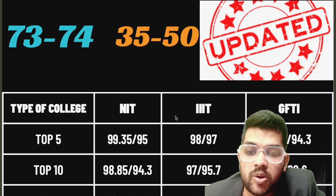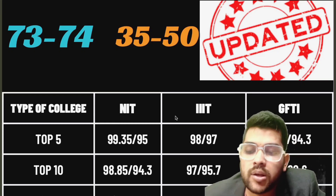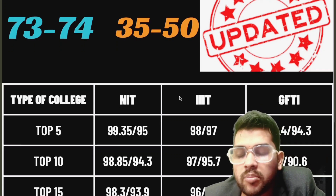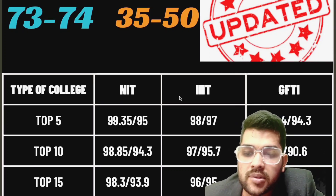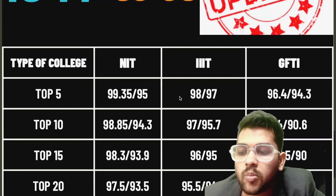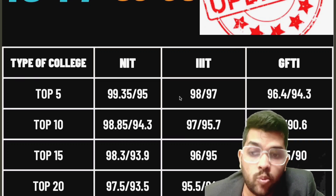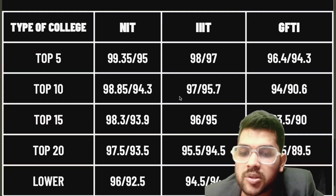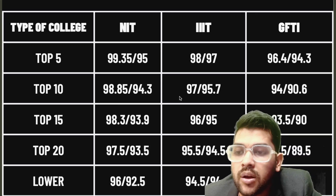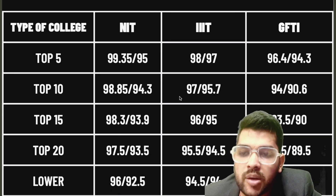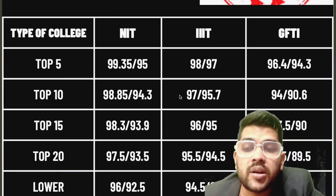For top 15 NITs: 98.3 percentile for CSE and 93.9 for lower branches. Triple IT: 96 for CSE, 95 for lower. GFTI: 93.5 for CSE, 90 for lower. For top 20 NITs: 97.5 for CSE and 93.5 for lower. Triple IT: 95.5 for CSE, 94.5 for lower. GFTI: 92.5 for CSE, 89.5 for lower. For lower NITs: 96 for CSE and 92.5 for lower. Triple IT: 94.5 for CSE, 94 for lower. GFTI: 92 for CSE and 88.4 for lower.